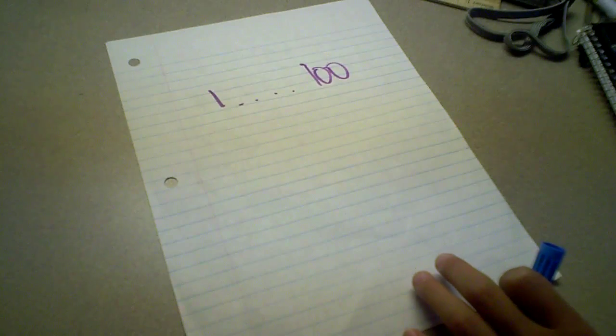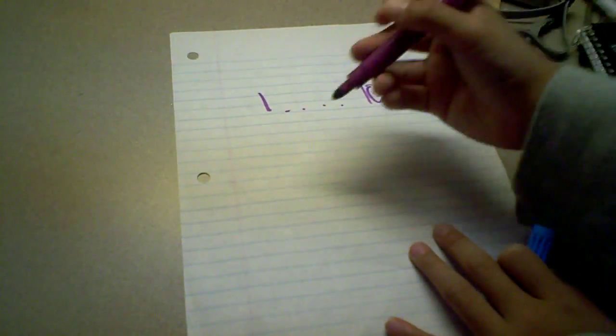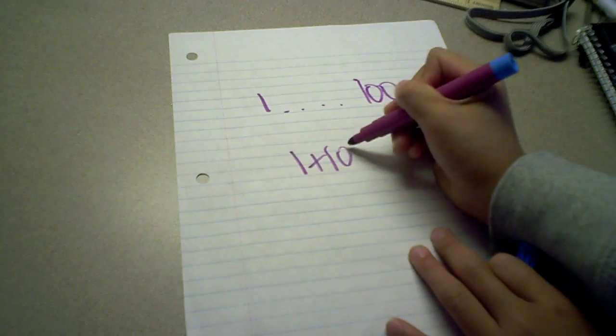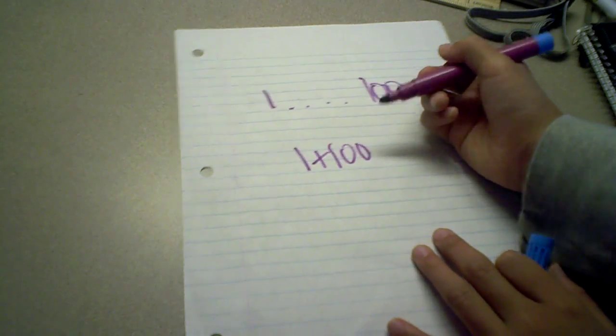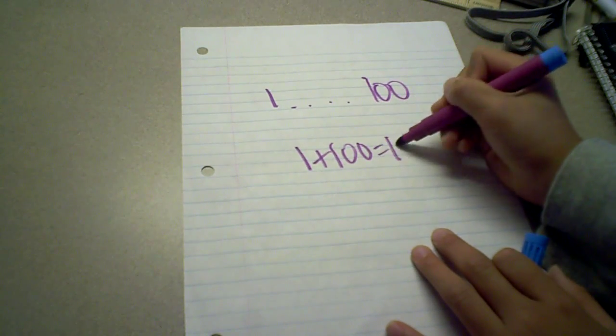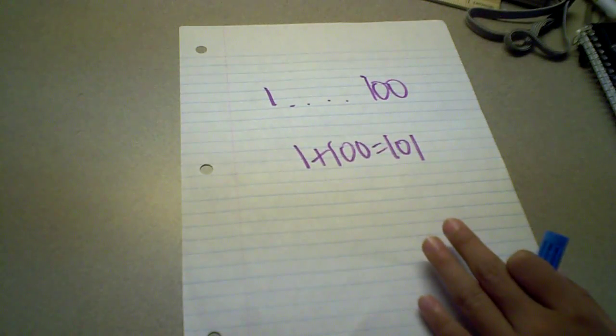First of all, if you add the first number with the last number, 1 plus 100, it equals 101. Correct?